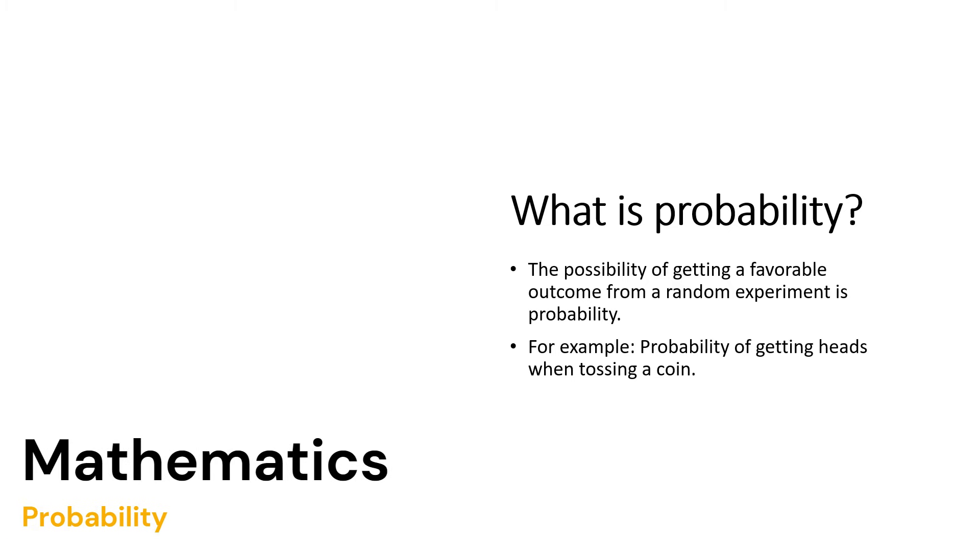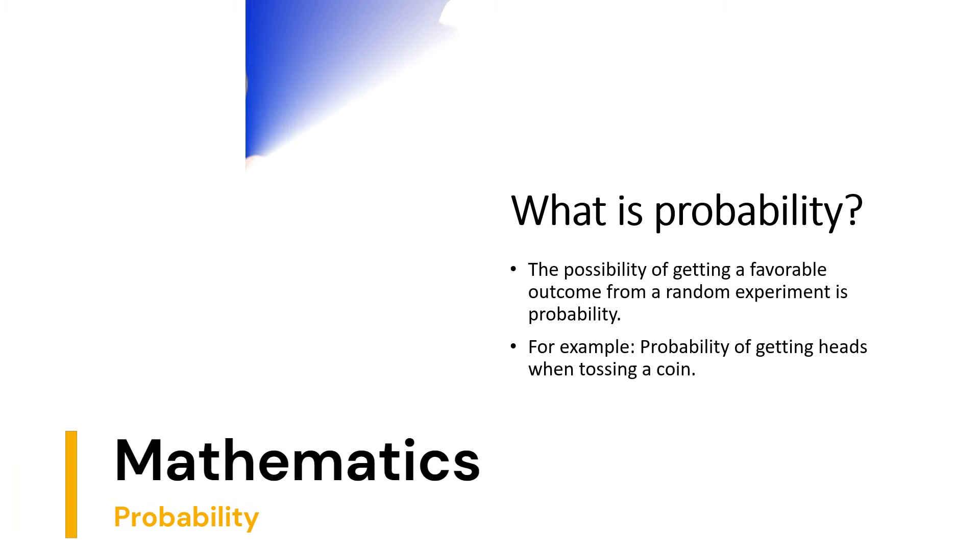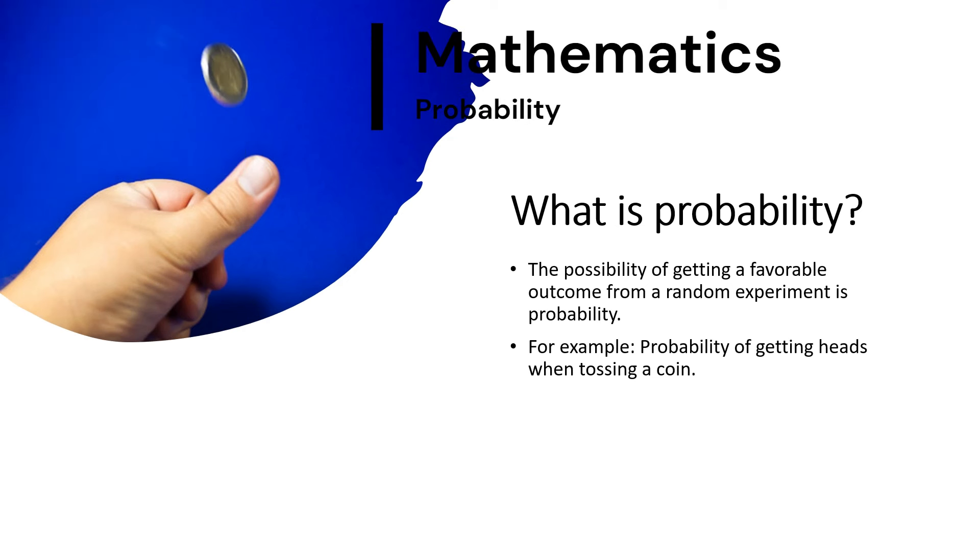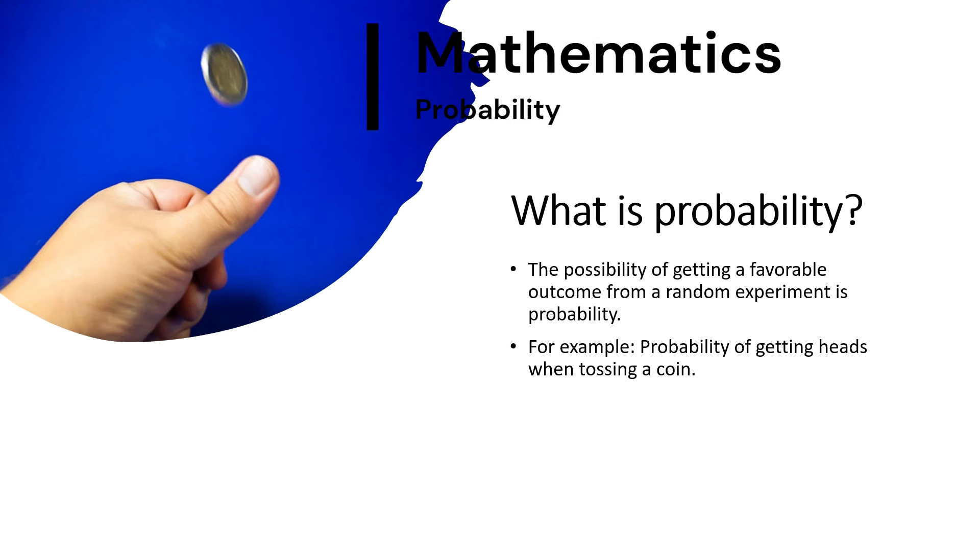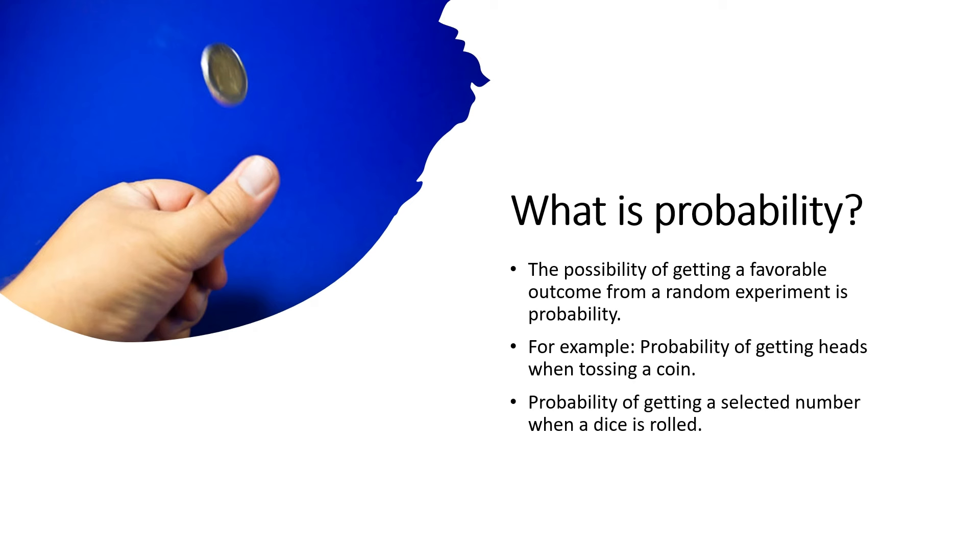Trying to toss, so the probable outcome of that would be either you will get a head or a tail. Other than that, you will not have any third result out of it. So the probability of the outcome of tossing a coin is either a head or a tail.